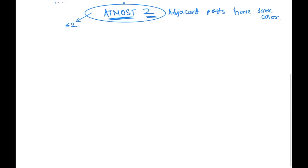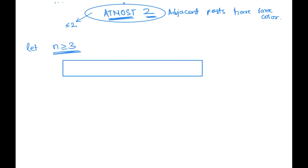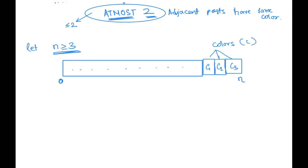Let's consider the case where the number of posts is greater than or equal to three, because for n less than or equal to two we can just manually calculate that. When n is greater than or equal to three, what I'm doing is separating the last three fences from the rest. If these are n fences starting at zero and ending at n, I separate the last three posts and give them colors c1, c2, and c3 — these are variables that can store any color from the k available colors.